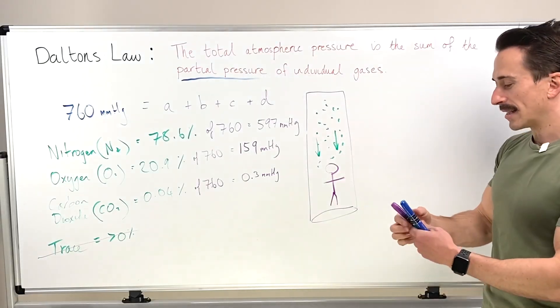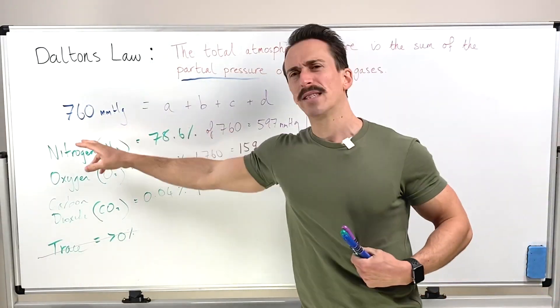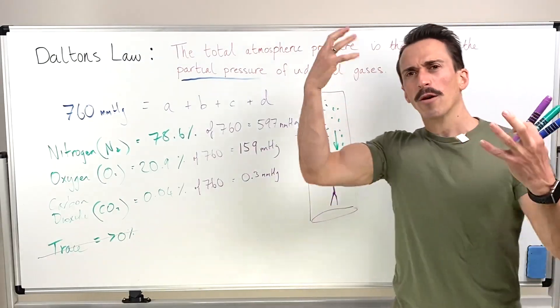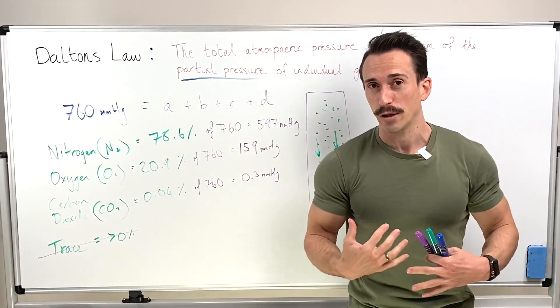This column of air that's sitting on top of us has that pressure. You might ask, well, if it's 760 millimeters of mercury, how come I'm not feeling this pressure? It's because we're born into it, so of course we don't feel that pressure around us.